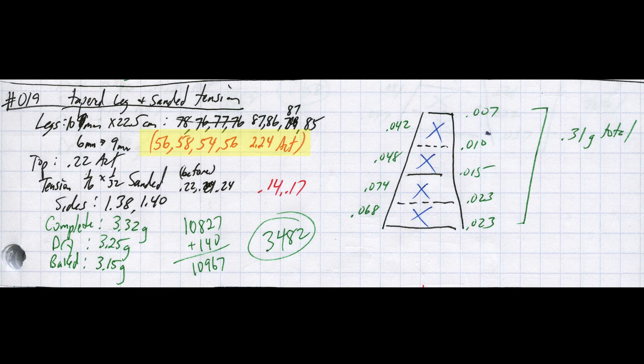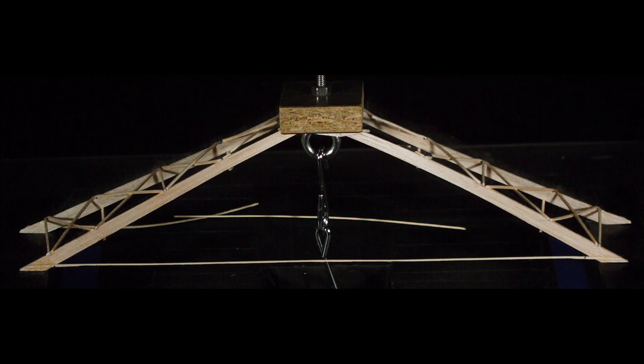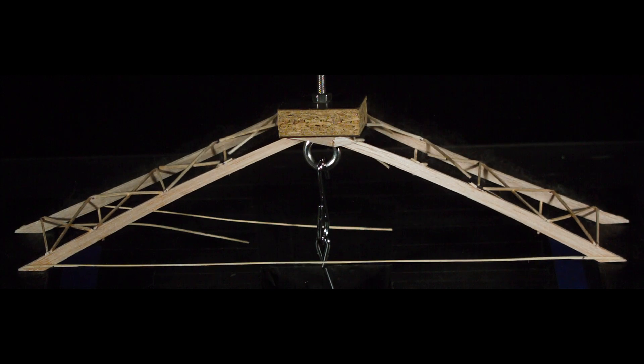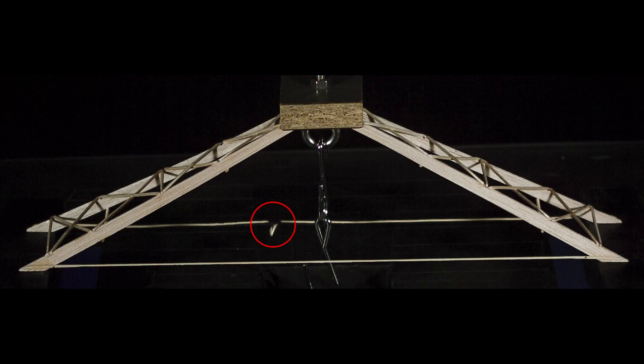I knew that this bridge wasn't light enough to beat the 4900 score, but it had the potential to be over 4700 if it performed well. Unfortunately, my tension sanding technique proved to be a problem here and you can see that for the first time the tension member actually broke mid-span. I probably sanded it a bit too much or unevenly and created a weak spot. I came up with a better solution for the next build.